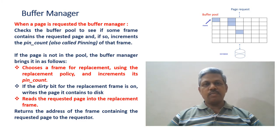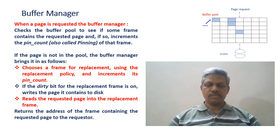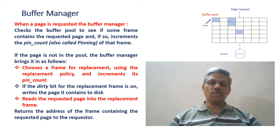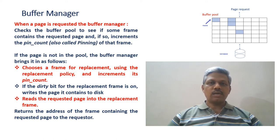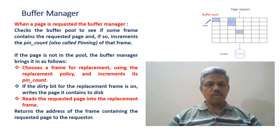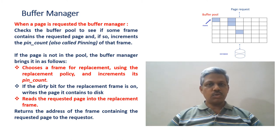When a request is made to the Buffer Manager for a particular page, it first checks whether that page is already available in one of the frames. If the page is available, it increments the pin count of that frame. If no frame contains the requested page, then it has to identify a suitable frame into which the page has to be brought. There are several methods to do this, called frame replacement policies, and by following one of them, it identifies a suitable frame.